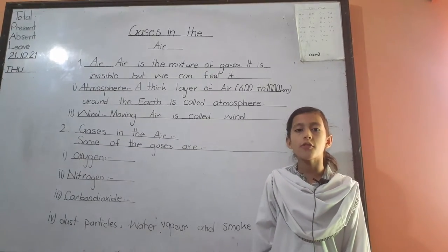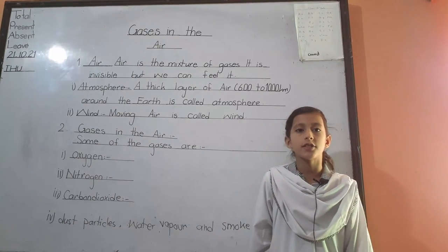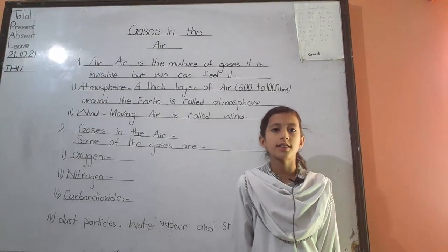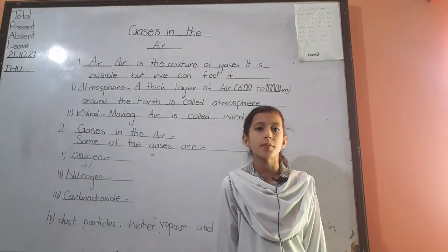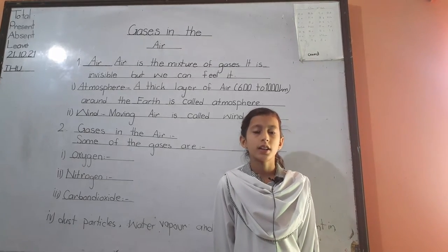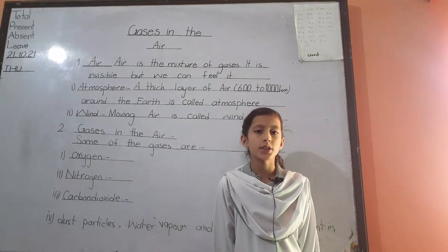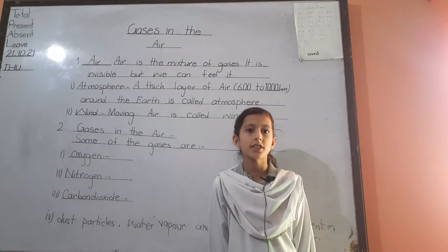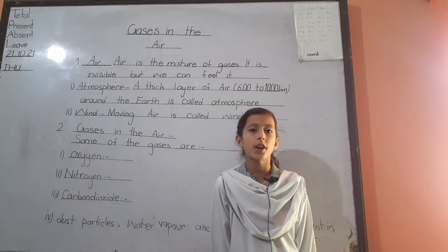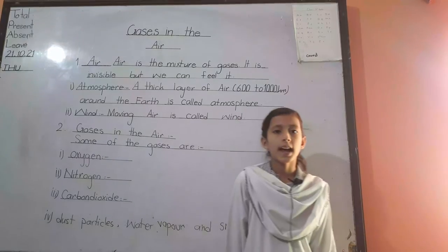The amount of carbon dioxide in the air is less than 1%. Plants use carbon dioxide to make their food. Thank you.